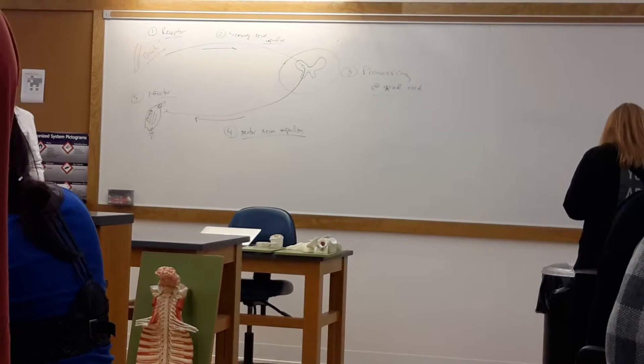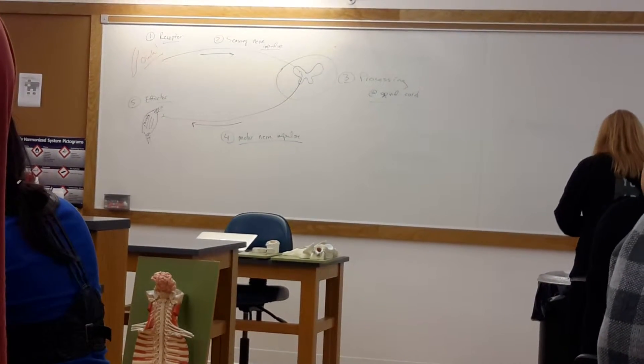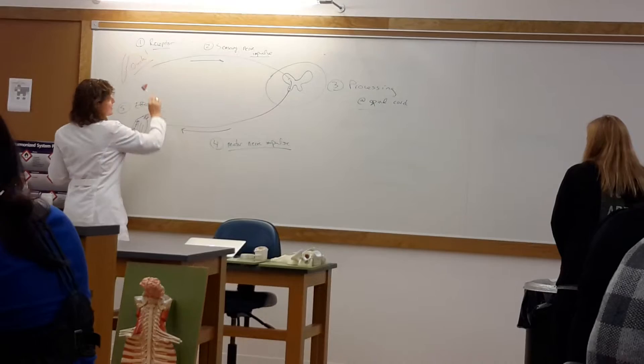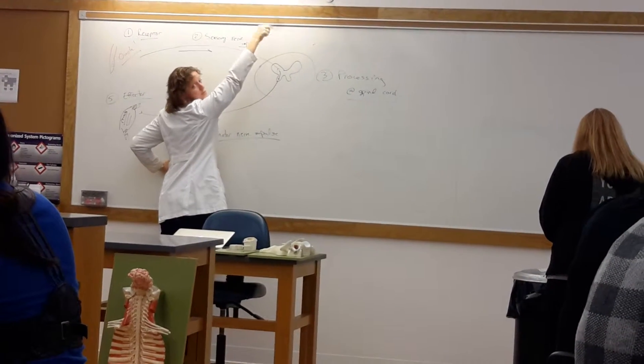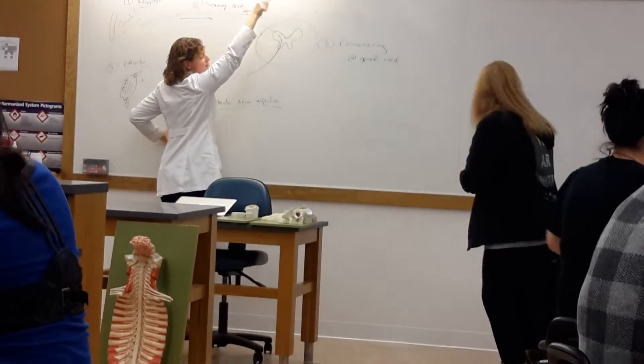Where does most of the other processing happen? In the brain. So every other thing has to come towards the spinal cord, then up to the brain for the brain to process, and then send it back down.